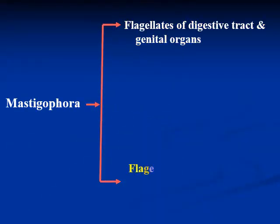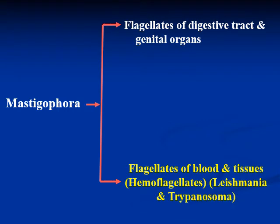We will talk about the classification of protozoa, where we classify them into four phyla. One of them is Sarcomastigophora, which is classified into two classes: Sarcodina (amoeba) and Mastigophora (flagellates). The flagellates are essentially classified into flagellates of the digestive tract and genital organs — characterized by Giardia and Trichomonas — and flagellates of blood and tissue, known as haemoflagellates, which contain two members including Leishmania.